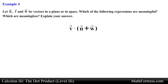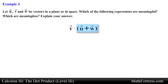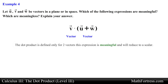The next expression is vector v dotted with the quantity of vector u plus vector w. The sum of vector u and vector w reduces to a vector, which will then be dotted with vector v. Since the dot product is defined only for two vectors, this expression is meaningful and will reduce to a scalar.